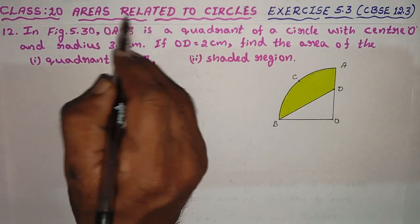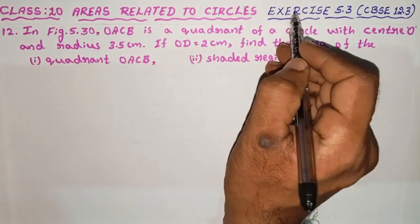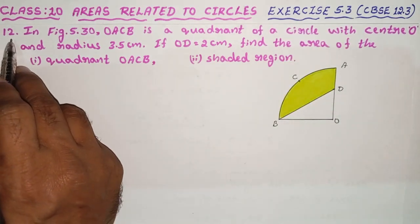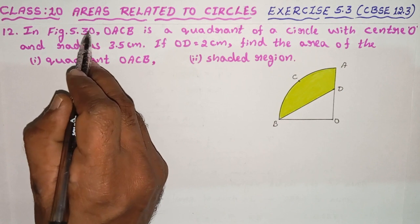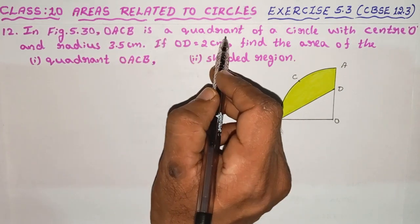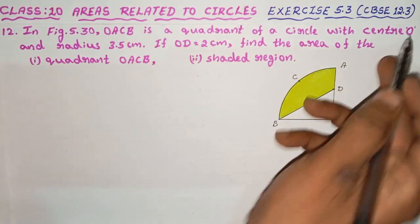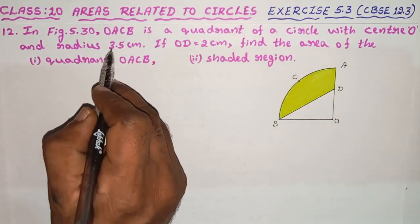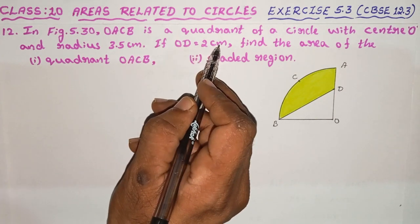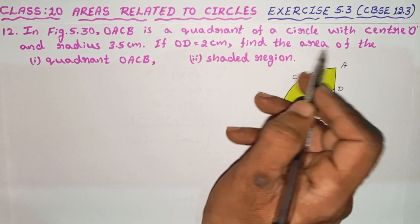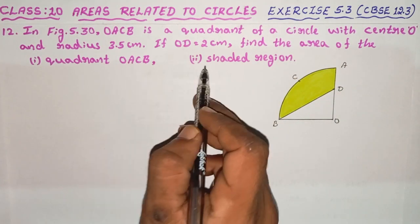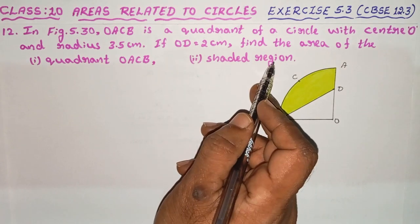Class 10, Areas Related to Circles, Exercise 5.3L, 12th problem. In figure 5.30, OACB is a quadrant of a circle with center O and radius 3.5 cm. If OD is equal to 2 cm, find: first, the area of the quadrant OACB; second, the area of the shaded region.